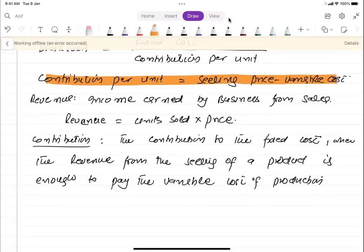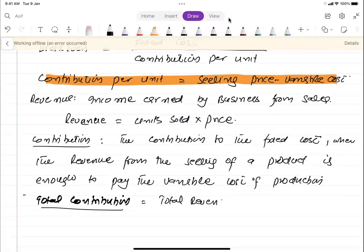We learned how contribution per unit is calculated. For total contribution, the formula is total contribution equals total revenue minus total variable cost. We can also calculate it as contribution per unit multiplied by units sold.